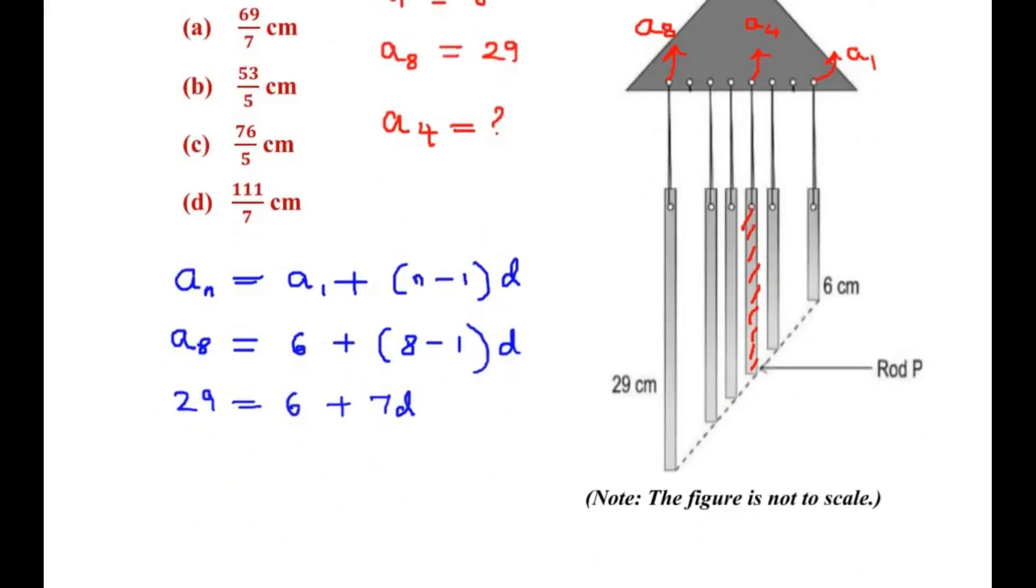Now let us take the 6 on the other side of the equal to sign, so we get 29 minus 6 equal to 7D.